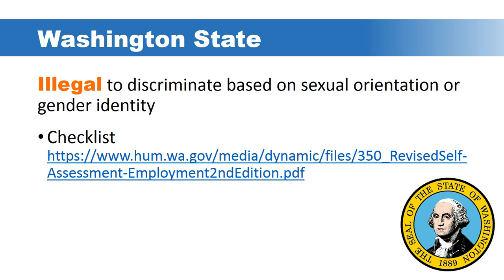Washington state is one of the states that makes it illegal to discriminate based on sexual orientation or gender identity. The state has provided a checklist link to help employers ensure compliance. You can pause the video and note this for yourself to take a look at what this checklist looks like and what is expected of an employer.